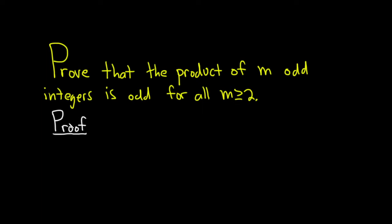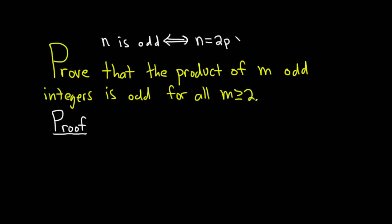First, recall what it means for an integer to be odd. An integer n is odd — this is the same thing as saying that n is equal to 2 times an integer p plus 1, where p is an element in the set of integers. So an integer is odd if it can be written as 2 times an integer plus 1.